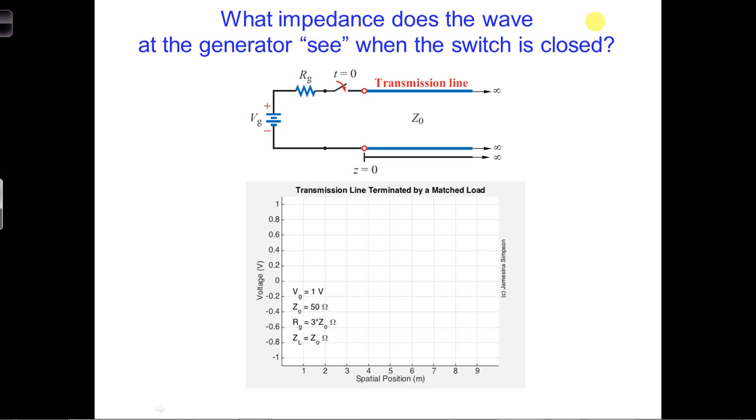So far, we looked at a very idealized scenario with a perfect battery attached to an infinitely long transmission line. In the next set of examples, we're going to work towards more realistic and useful scenarios.